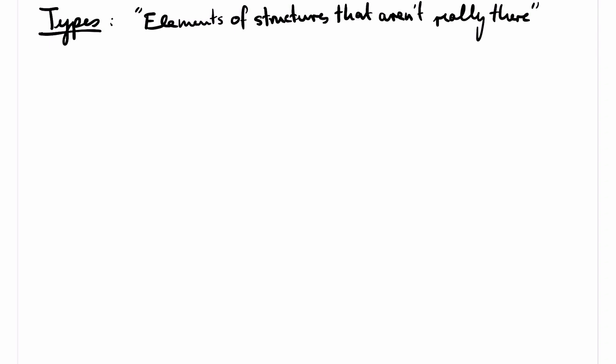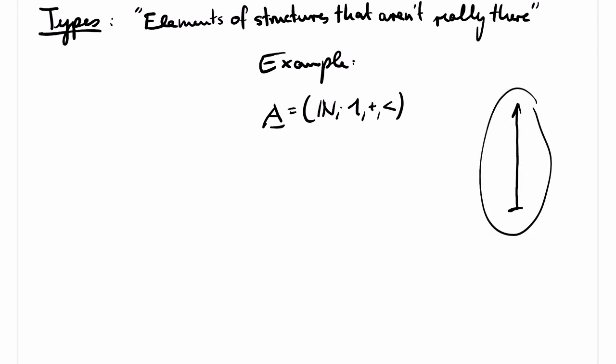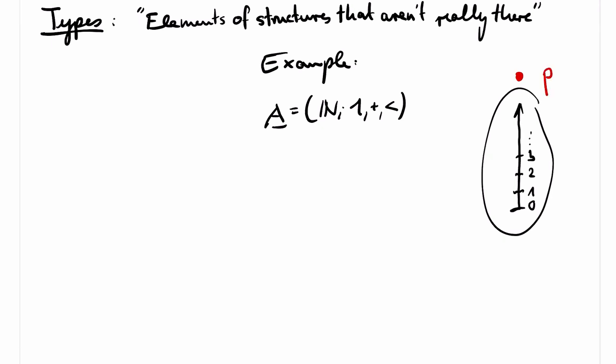Welcome! This video is about types in model theory. Types can be used to talk about elements of a structure that are not really there, informally speaking. For example, if A is a structure whose domain is the set of natural numbers, carrying the constant 1, binary addition, and the order, then we may want to talk about an element that is larger than every natural number. Clearly, there is no such element in the structure. But to better analyze a given structure, we might want to talk about such fictional elements as well. And types offer a very natural and convenient way to do so.